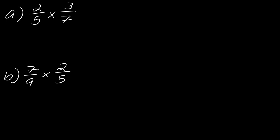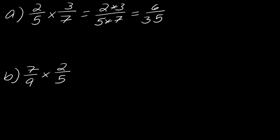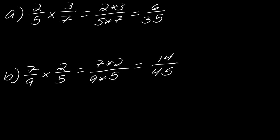Let's put this into practice. For example A: two fifths times three sevenths. We multiply straight across — two times three over five times seven — so that gives us six over thirty-five. Nothing to reduce, we're done. For example B: seven ninths times two fifths. Multiply the tops together and the bottoms together to get 14 over 45. Done.